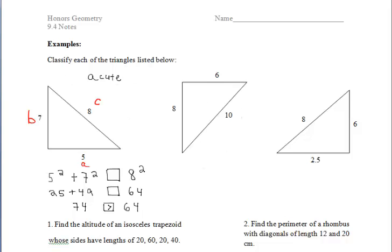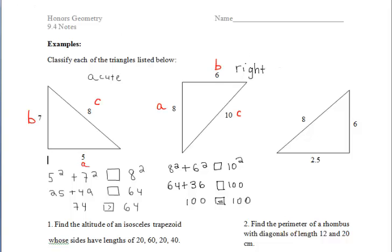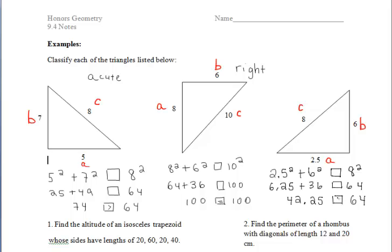For the second example, we have to make 10 our C and then once again you could choose how you want to label your A's and B's. And then when we do A squared plus B squared and compare it to C squared, we end up getting 100 on both sides. So since A squared plus B squared equals C squared, the triangle is right.